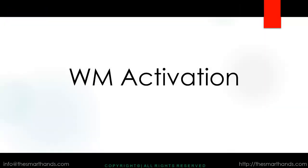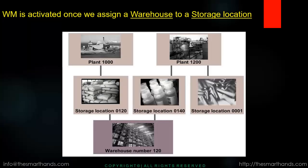We'll start with WM activation — how we activate warehouse management in the SAP system. Basically, as you can see on this screen, a warehouse management system will be activated as soon as the storage location is linked to a warehouse number. In the standard SAP MM system, we have a plant, and under a plant we have a storage location. As soon as you link or assign a warehouse number to a storage location, it will be activated for warehouse management.